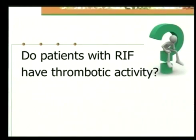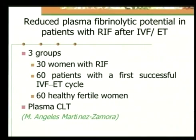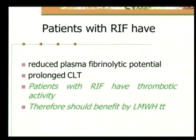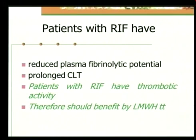For the second question — do patients with recurrent implantation failure have thrombotic activity? Angela Martinez-Zamora conducted a study on reduced plasma fibrinolytic potential in patients with recurrent implantation failure after IVF-ET. She compared plasma clot retraction time in three groups: 30 women with recurrent implantation failure, 60 patients with their first successful IVF-ET cycle, and 60 healthy fertile women. She concluded that patients with recurrent implantation failure have a reduced plasma fibrinolytic potential, as evident by their prolonged clot retraction time, and therefore should benefit from low molecular weight heparin treatment.